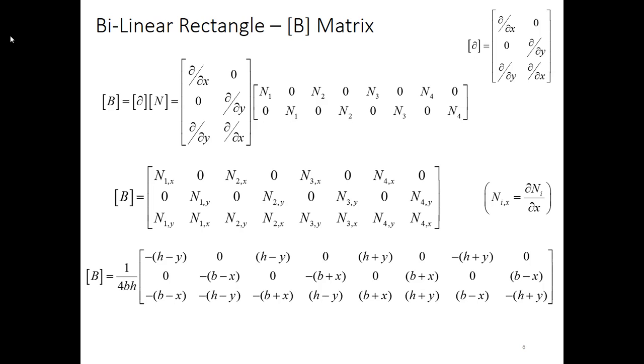Now one thing to note here: unlike the linear triangle that we just developed, the three-node one, because I've got that bilinear term, the B matrix actually depends on x and y. That means I have a linear variation of strain in the bilinear rectangle element, whereas in the triangle I had a constant strain throughout the whole thing.